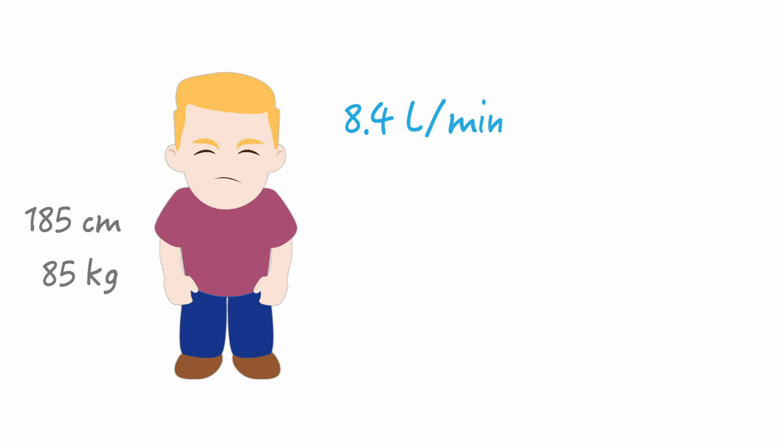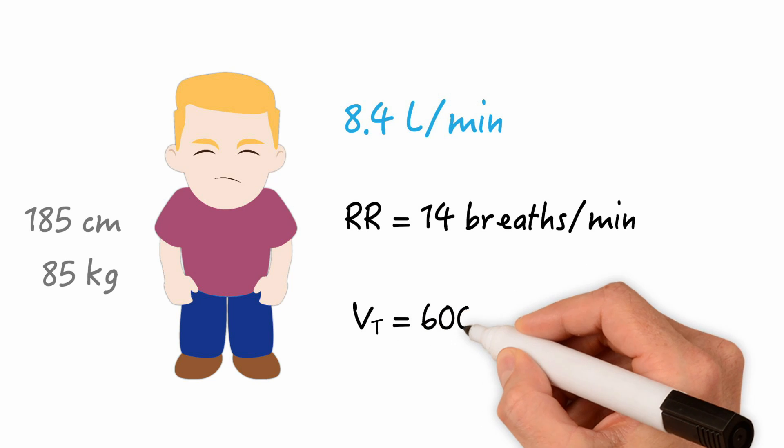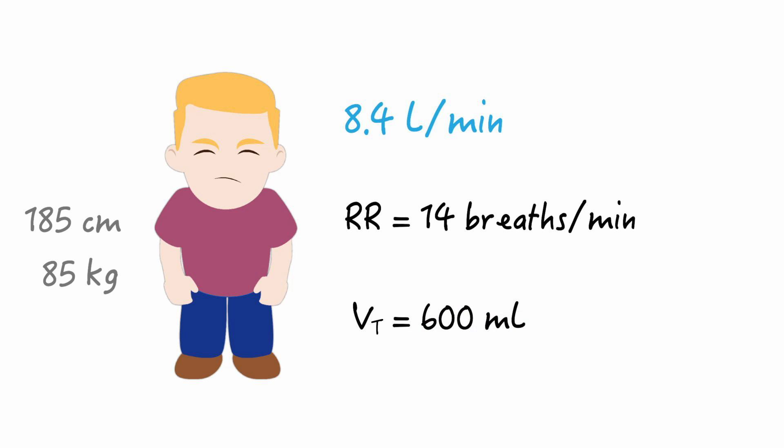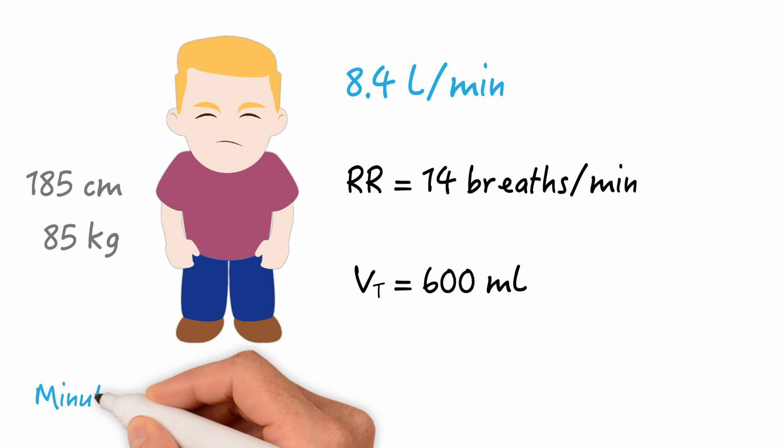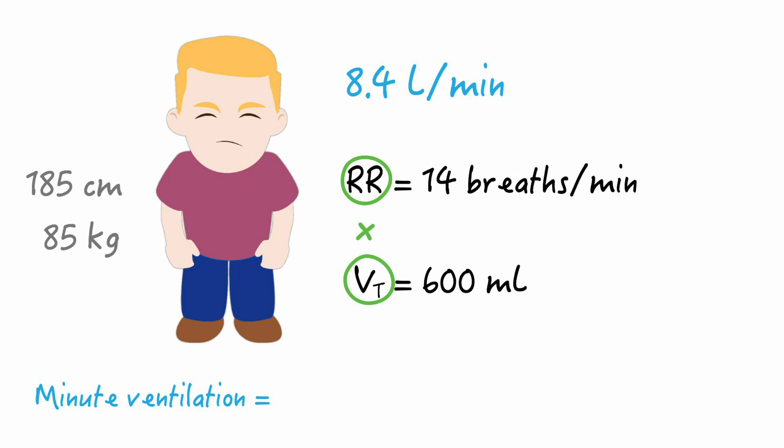So now watch this. If I know that my patient has a minute ventilation requirement of 8.4 based on their gender and height, and then let's say for example I wanted for them to breathe 14 breaths per minute, well then, I would know that my patient will require a tidal volume of 600 milliliters to meet the need of the patient's minute ventilation, because minute ventilation is volume times rate. In this case, 600 milliliters, which is 0.6 liters, times 14 breaths a minute, and this will equal 8.4 liters per minute.